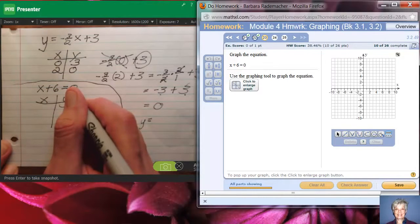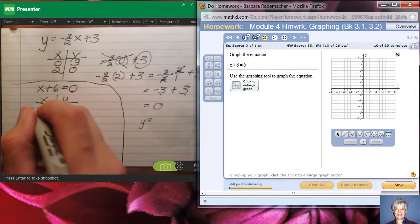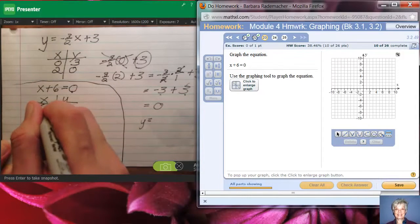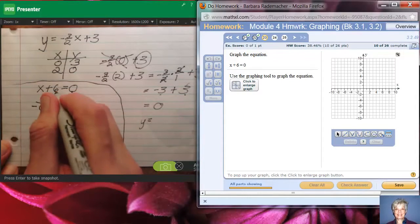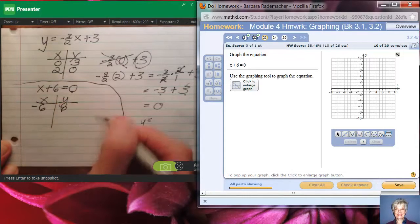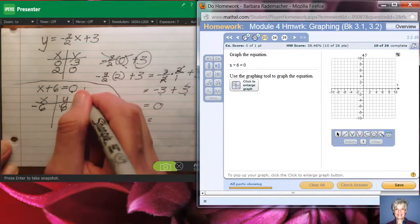There's only one number: negative 6. Negative 6 plus 6 is 0, and there really is no other number you can choose and have a true answer there.